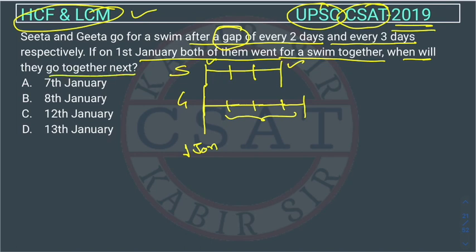So Sita is going after a gap of two days, so this is a gap of two. She is going on the 3rd day. And Gita is going after a gap of three days: first, second, third, fourth — so she goes on the 4th day. So we have to find when they will go together.